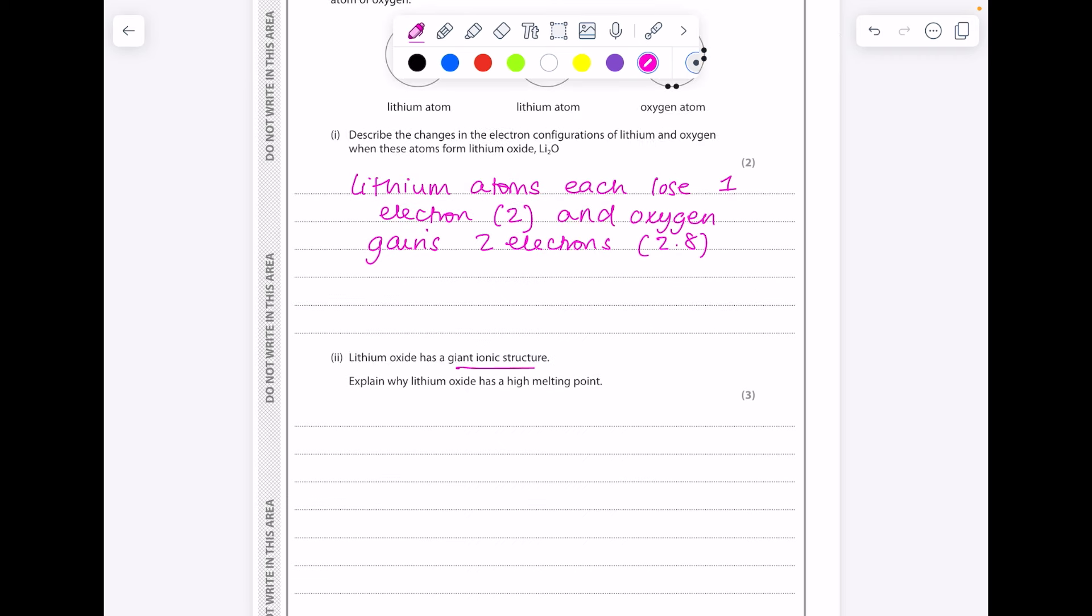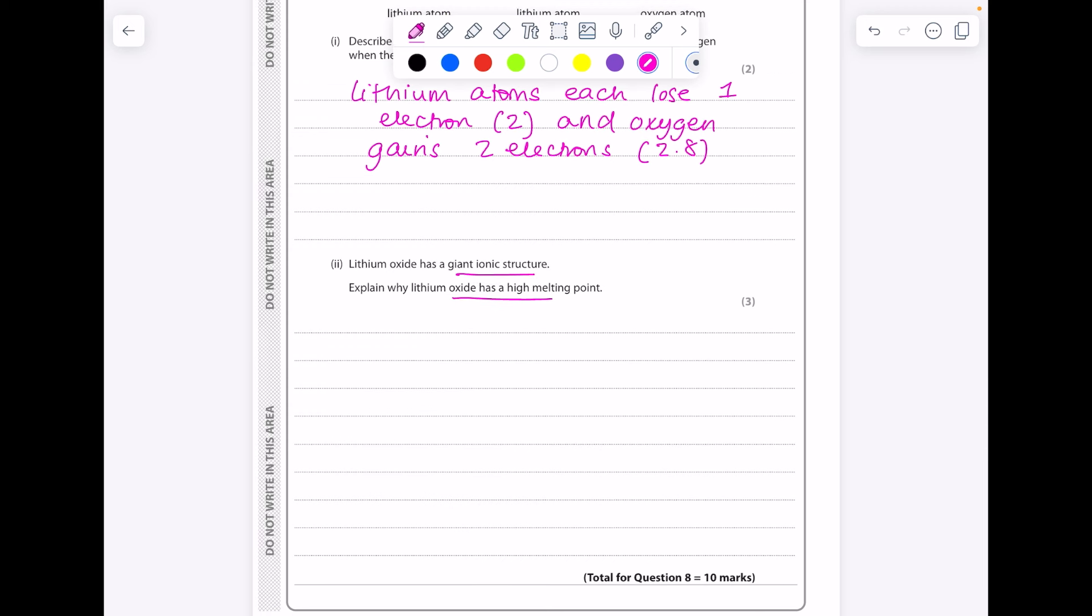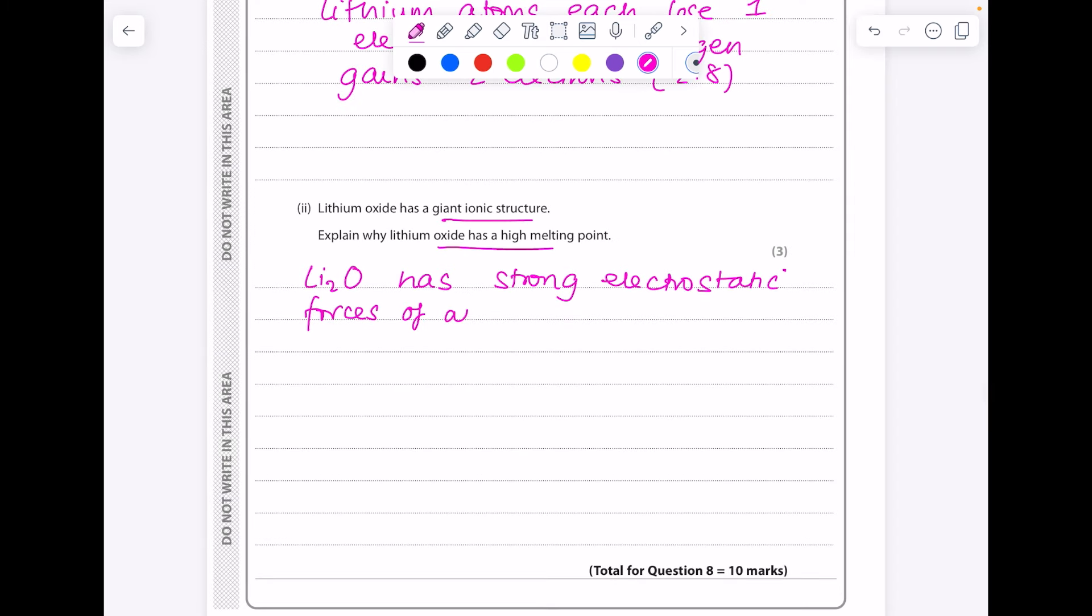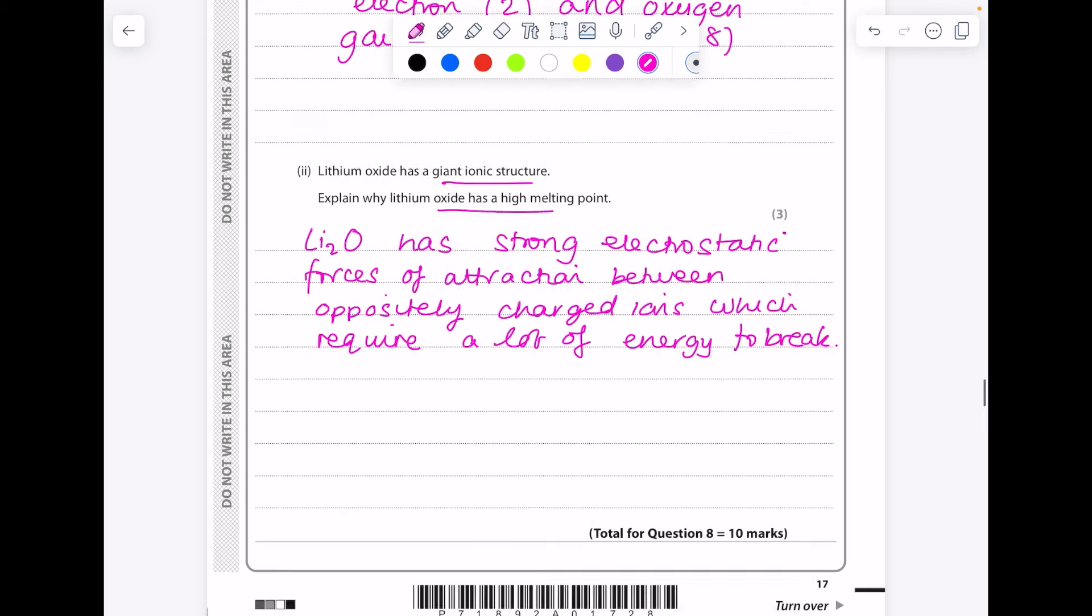Lithium oxide has a giant ionic structure. Explain why it has a high melting point. So very specific wording here. So you want to say that lithium oxide has strong electrostatic forces of attraction between oppositely charged ions which require a lot of energy to break. No need to fill up all the lines as long as you're nice and specific.